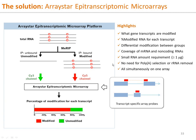So the microarray can tell what gene transcripts are modified, the percentage of modified RNA for each transcript, the differential modification between groups, coverage of mRNA and non-coding RNAs, and requires small RNA amounts — about 1 microgram. There is no need for poly-A selection or ribosomal RNA removal as required by MeRIP-seq, and all of the above is accomplished in one array simultaneously.